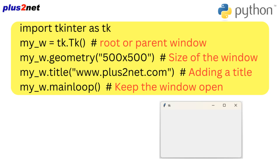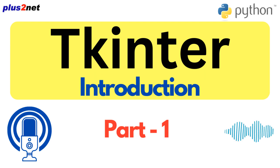Now comes the magic ingredient: mainloop — the heart of the application. Without mainloop, your window would just appear for a split second and then vanish. It's what keeps your application running and listening for events — like when the user clicks a button, types something, or even moves the mouse. Mainloop is basically playing traffic cop, directing all those user actions. It's the core of how GUIs work — this whole event-driven architecture.